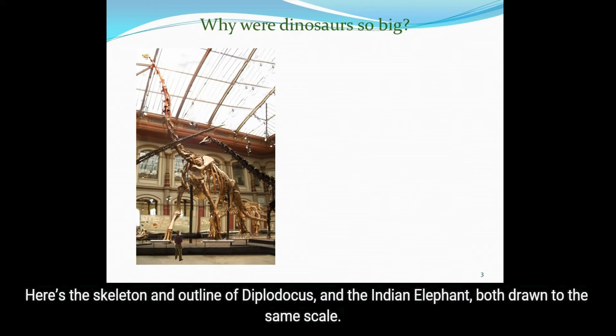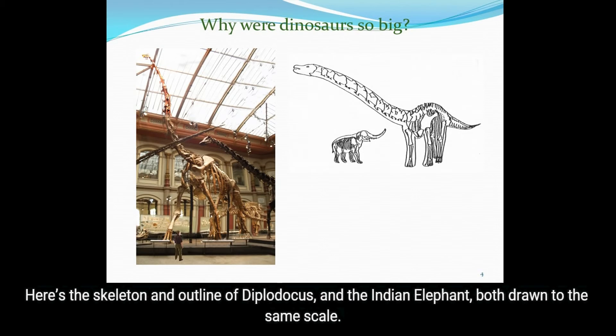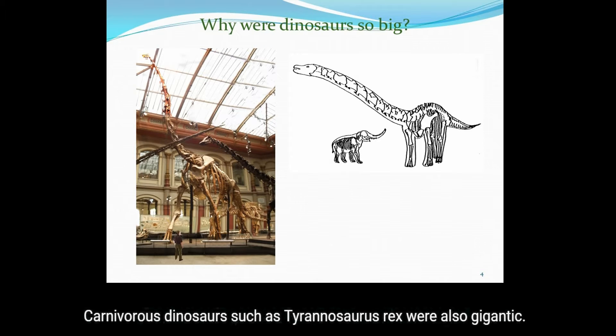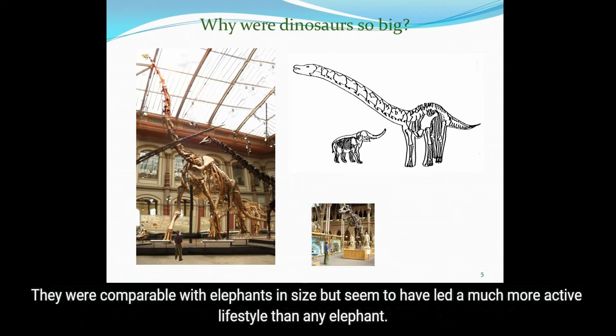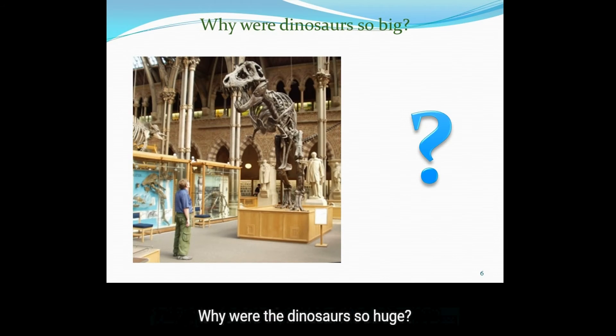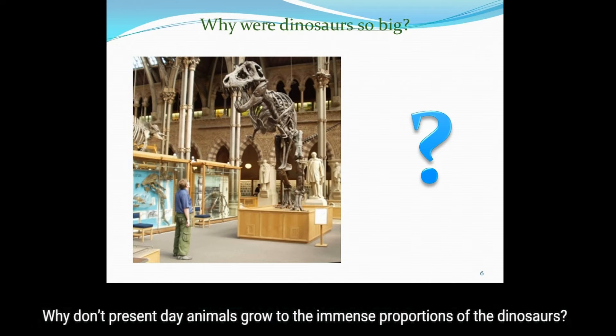Here's the skeleton and outline of Diplodocus and the Indian elephant, both drawn to the same scale. Diplodocus stood 3.8 meters tall at their hips. The Indian elephant is only 3.1 meters head height. Carnivorous dinosaurs such as Tyrannosaurus rex were also gigantic. They were comparable with elephants in size, but seemed to have led a much more active lifestyle than any elephant. The gigantic size of dinosaurs is obvious, but why were the dinosaurs so huge? Why don't present-day animals grow to the immense proportions of the dinosaurs?